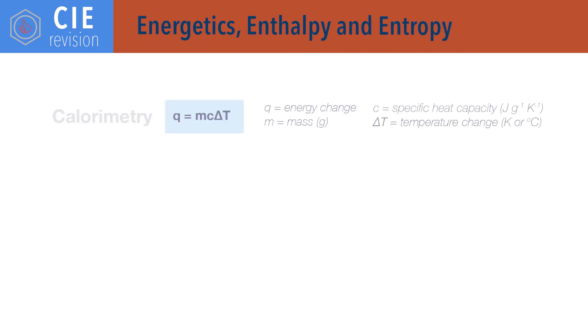For energetics, enthalpy and entropy. Q equals mcΔT, where Q is energy change, m is mass, c is specific heat capacity, and ΔT is change in temperature. Note that the units for Q can be either joules or kilojoules depending on the units given for specific heat capacity. Temperature change can be in either degrees Celsius or kelvin, as a change in one degree Celsius is the same as a change in one kelvin.